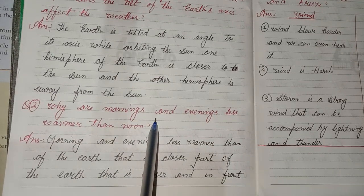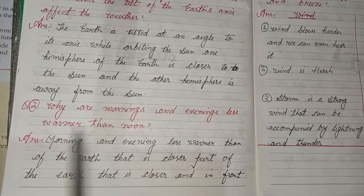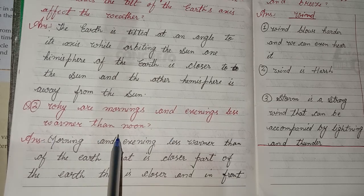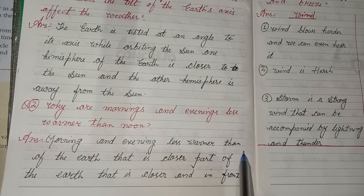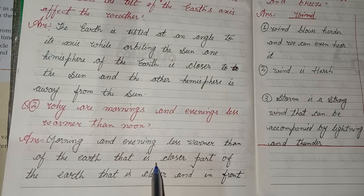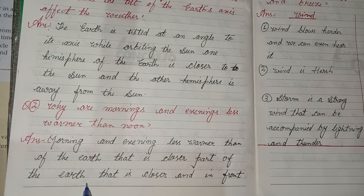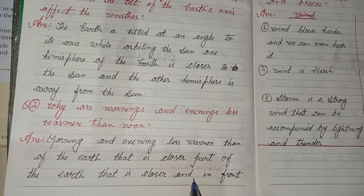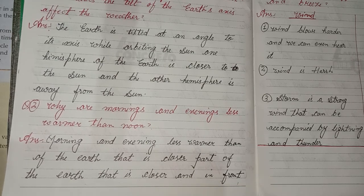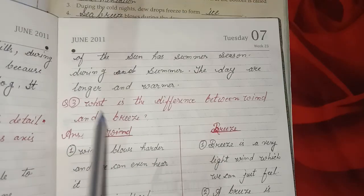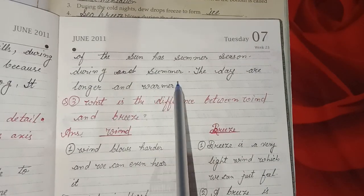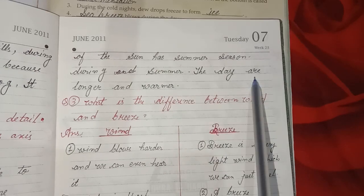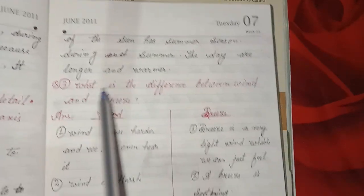Second detailed question: Why are mornings and evenings less warm than noon? Answer: The part of the earth that is closer to and directly in front of the sun has the summer season. During summer, the days are longer and warmer.